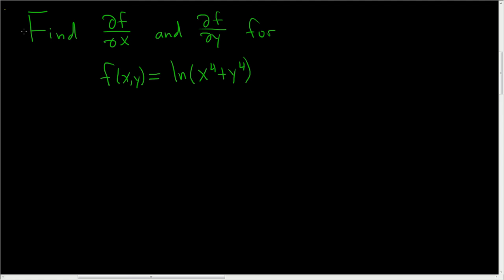We're being asked to find the partial derivative with respect to x and the partial derivative with respect to y of this multivariable function, f of x, y. When we take the partial derivative of f with respect to x, we want to treat the y as a constant.